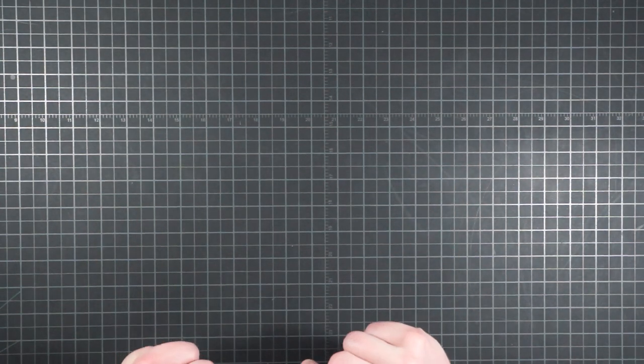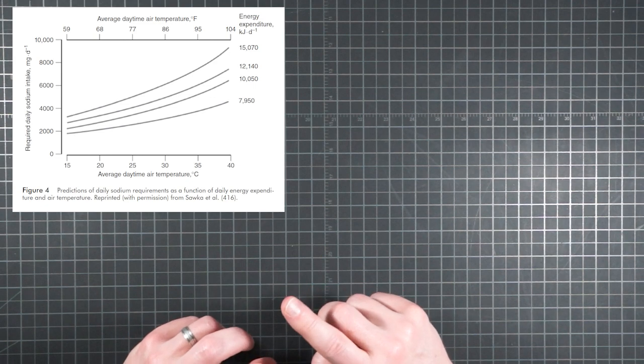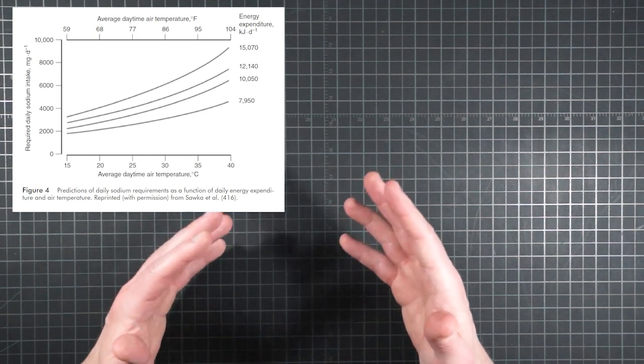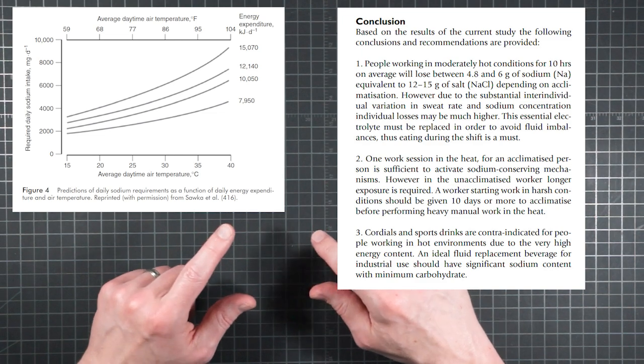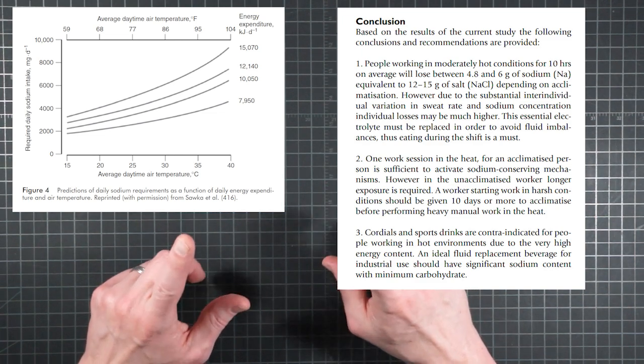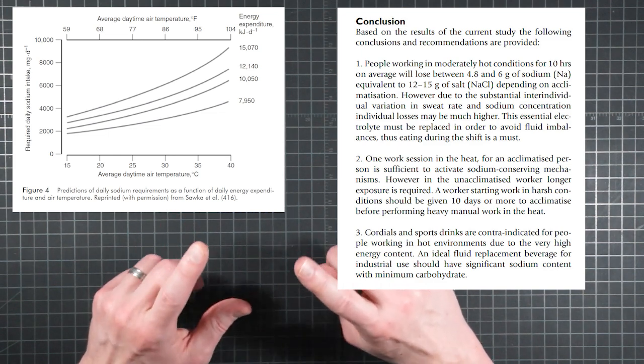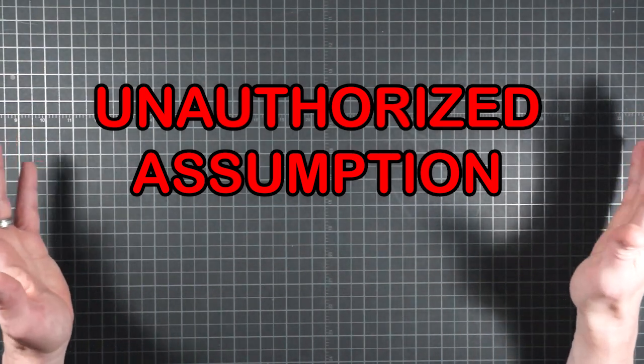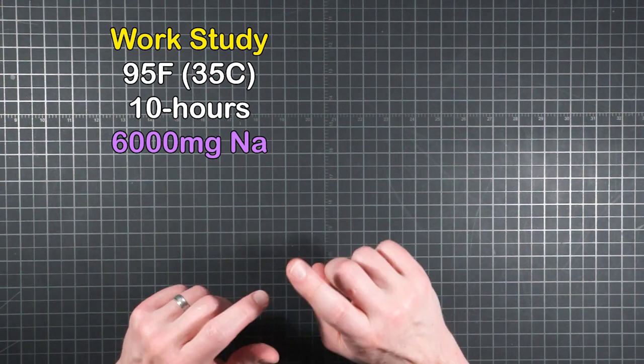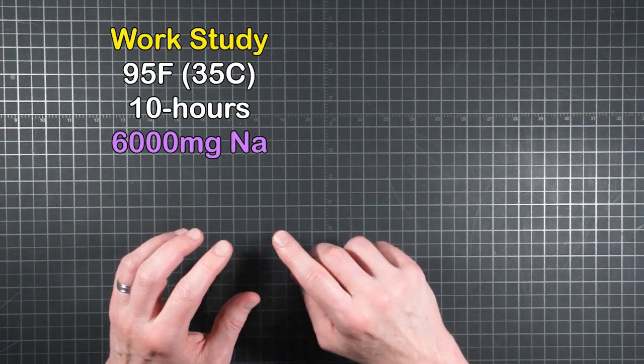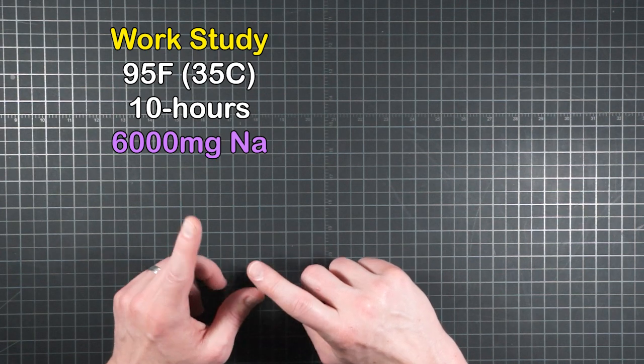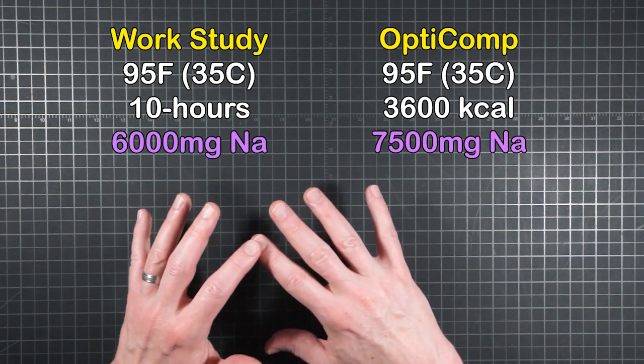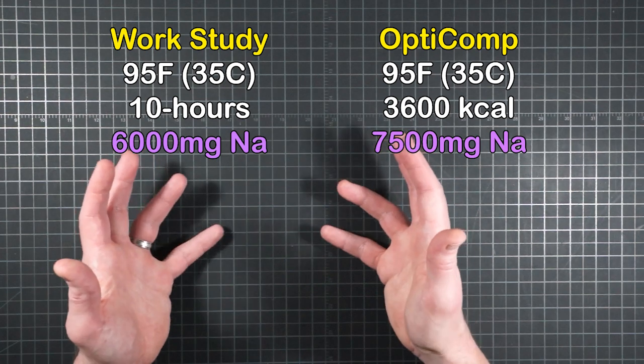So herein lies one of the biggest assumptions necessary for the calculator. Let me explain. You see, the OptiComp graph just lists daily sodium intake. They didn't break it down between your normal daily requirement and the additional need for excess sweating. So when I went back to the 10-hour work study, which specifically addressed sweat losses and used the hiker-like exertion of 40% VO2 max, I made an unauthorized assumption.